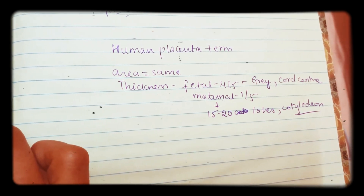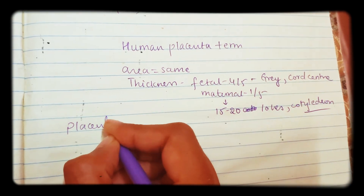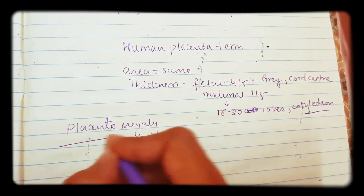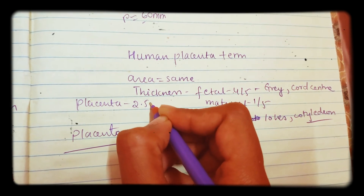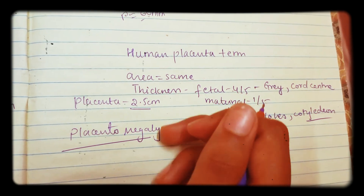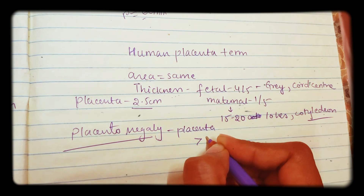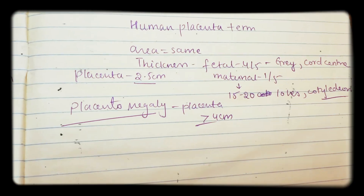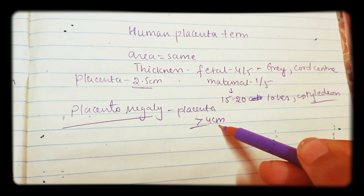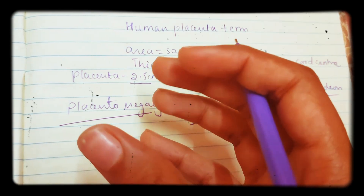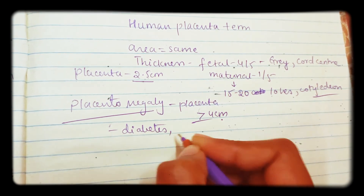Now coming to placentomegaly. In the name itself you can see the placenta has become large. To understand this, you need to know the normal placenta thickness is about 2.5 centimeters. In placentomegaly, the placenta is greater than or equal to 4 centimeters. So normally it should be 2.5 cm; when it is 4 cm or greater, it is called placentomegaly — the placenta has become large.